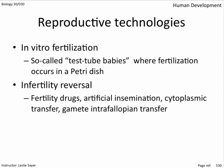Causes of infertility in men include obstruction of the vas deferens possibly due to a sexually transmitted infection, low sperm count which may be genetic or due to lifestyle choices, unviable or deformed sperm caused by STIs, radiation, or chemicals, and erectile dysfunction. For women, causes include blocked oviducts from sexually transmitted infection, inability to ovulate due to hormone imbalances, endometriosis where endometrial tissue grows outside the uterus causing pain at certain times of the month, and damaged eggs due to radiation or chemicals.